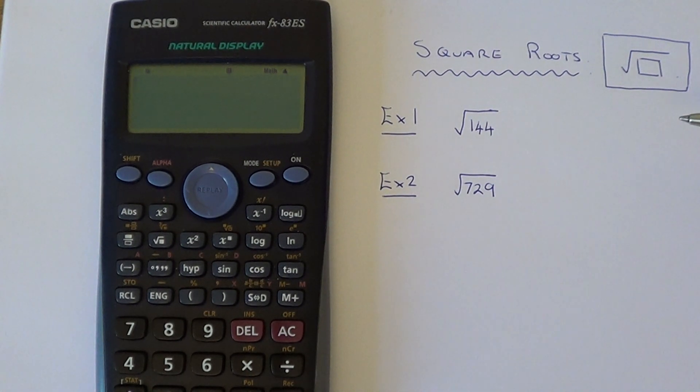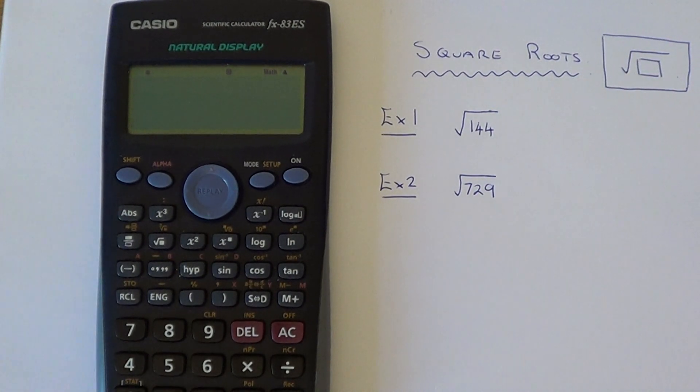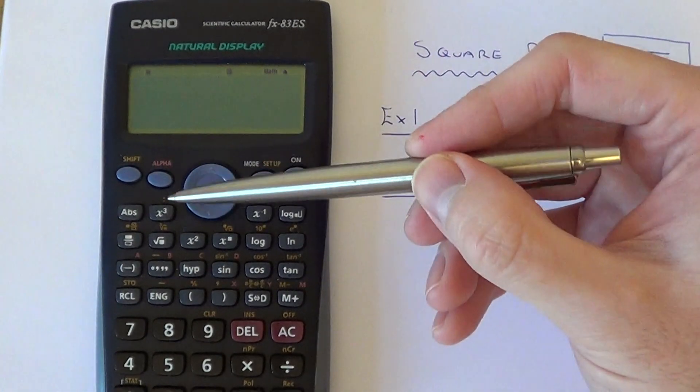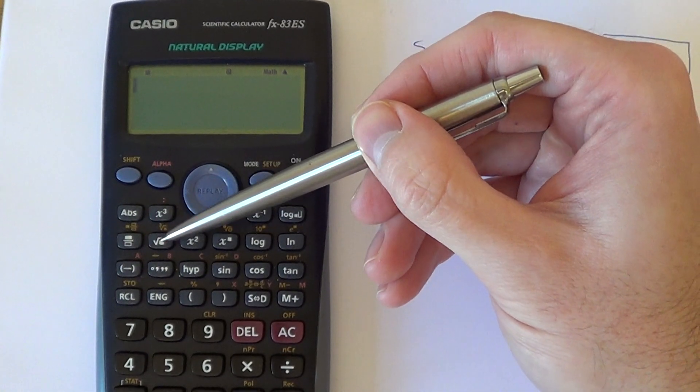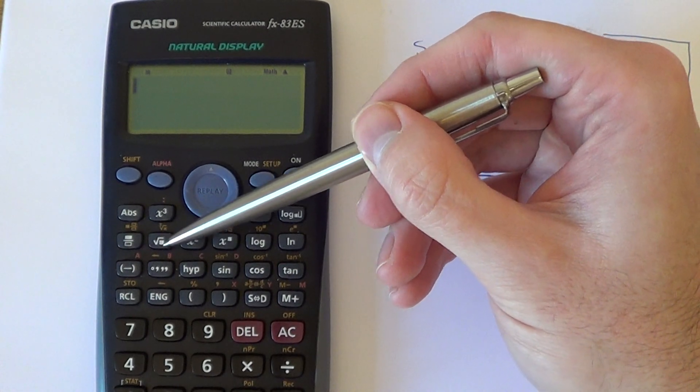The button that you'll be looking for is a little tick with a box underneath. And you'll find this key on the second row down and it's the second key in on that row.